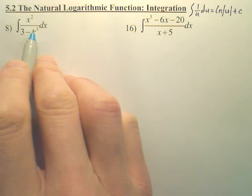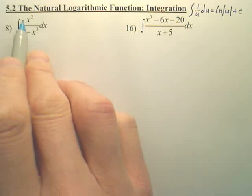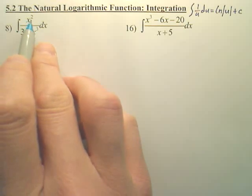Number eight, we're going to integrate this, and the best guess is u-substitution. Choosing which one to u-substitute, probably the bottom one, because when you derive this, you'll get the top, or a variance of the top.